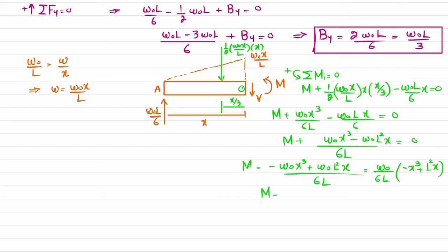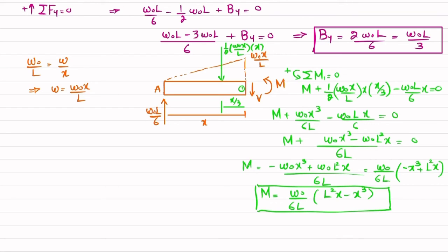The moment equation can be written as M = (w₀ / 6L)(L²x - x³). This is the moment equation.